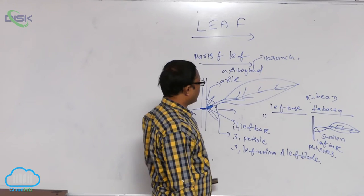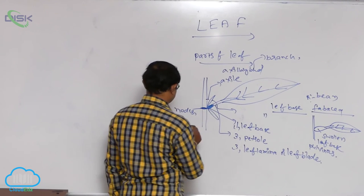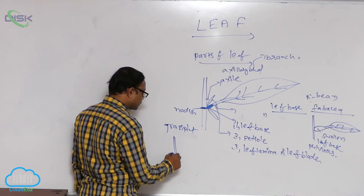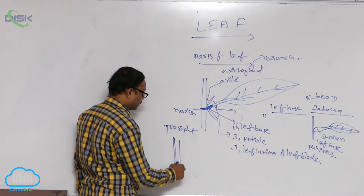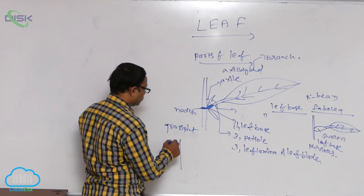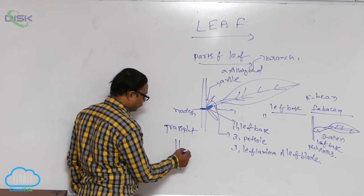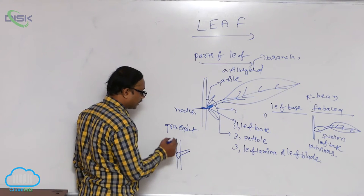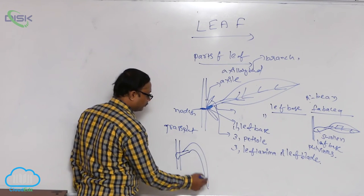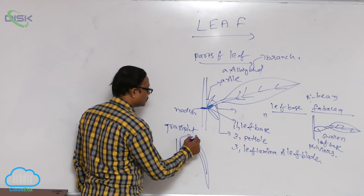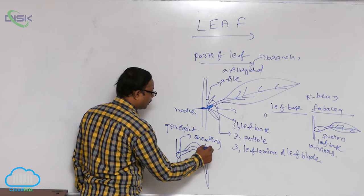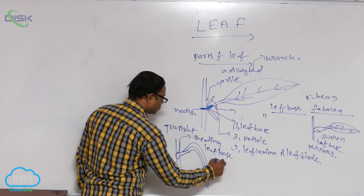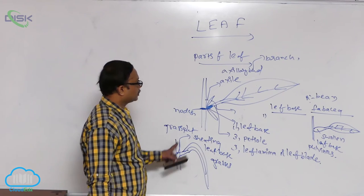In some plants, for example in grass plants, the leaf base is expanded into a sheath-like structure. This leaf base completely or incompletely covers the stem, just like a sheath. That is known as a sheathing leaf base, and it appears in grasses.